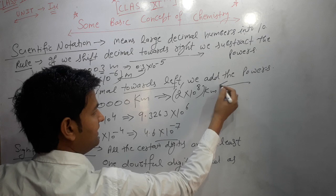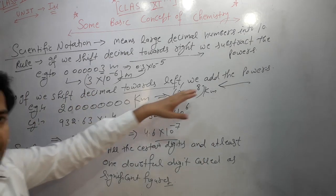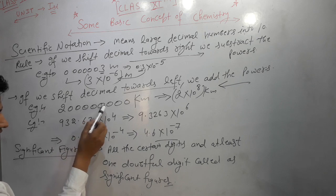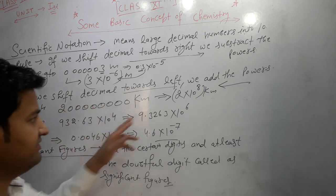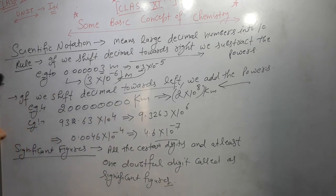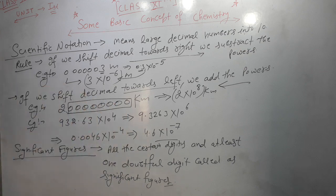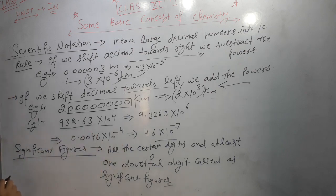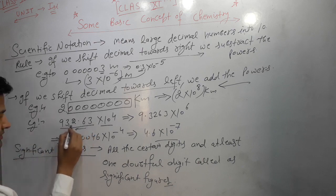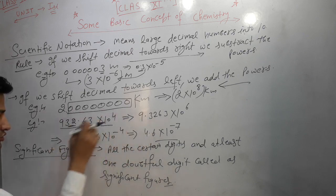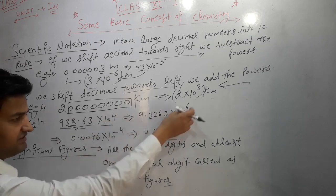If we shift the decimal towards the left, we add the power. Example: 200,000,000 has 8 digits after the 2, so it can be written as 2 × 10⁸. Another example: 9.3263 × 10⁴ — if we shift two decimal places to the left to get 9.3263, we add 2 to the power, giving 9.3263 × 10⁶.